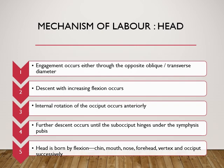Finally, delivery of the head: engagement occurs through the opposite oblique diameter or the transverse diameter. There is descent with increasing flexion followed by internal rotation of the occiput anteriorly. Further descent occurs until the subocciput hinges under the symphysis pubis. The head is then born by flexion — the chin, mouth, nose, forehead, vertex, and the occiput are delivered successively.